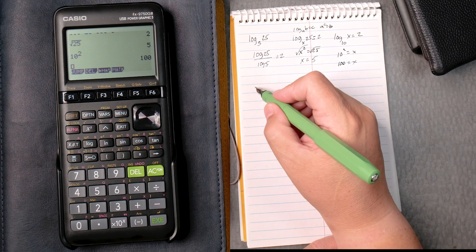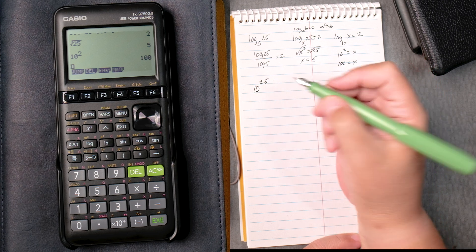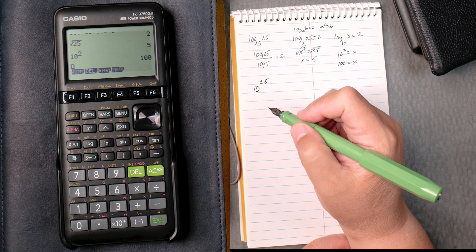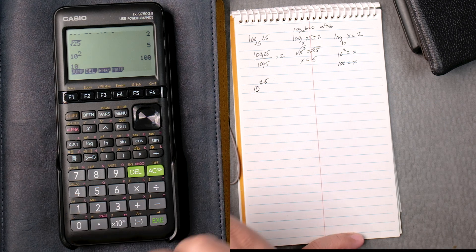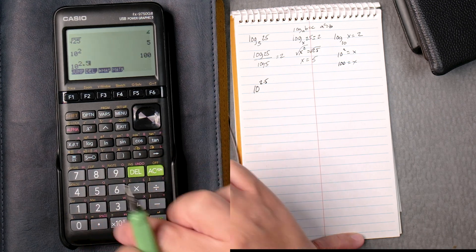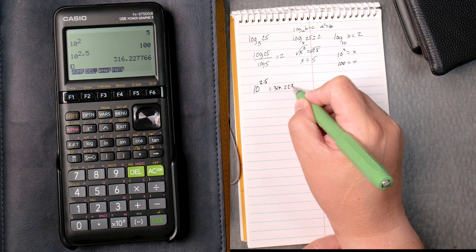Then some anti-log stuff, 10 to the 2.5. We can do it a couple of ways. We can say 10 carat 2.5, execute, and that gives you 316.227.